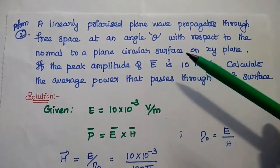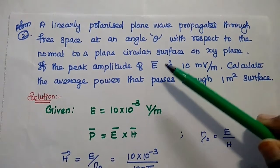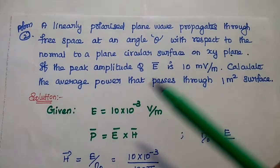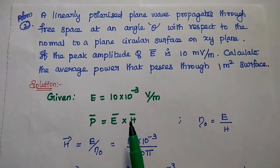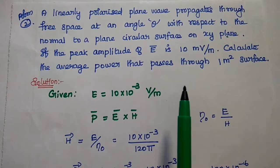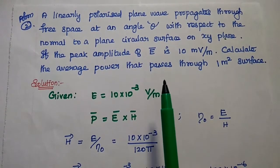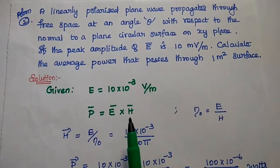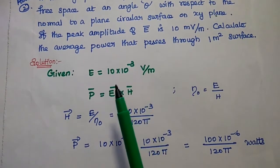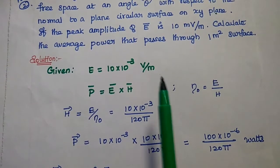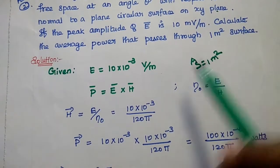The next problem: a linearly polarized plane wave propagates through free space at an angle theta with respect to the normal to a plane circular surface on the XY plane. If the peak amplitude of the E vector is 10 millivolt per meter — that is 10 × 10⁻³ V/m — calculate the average power that passes through a 1 meter squared surface area S = 1 m².